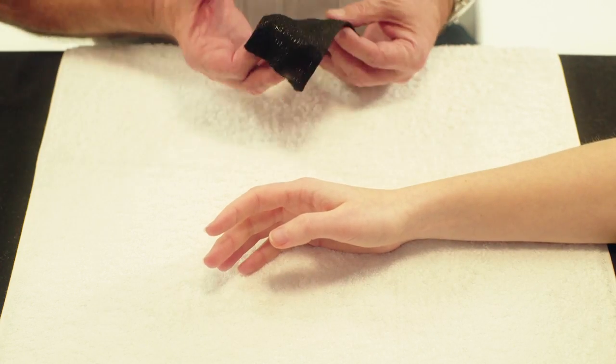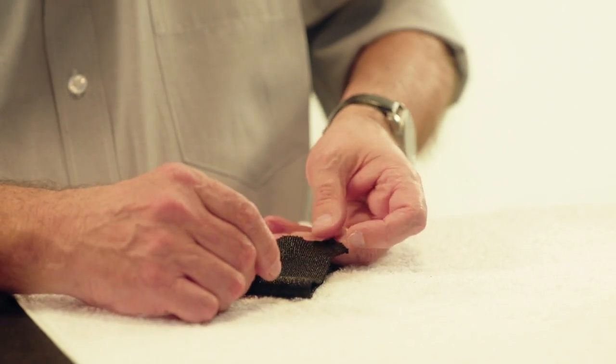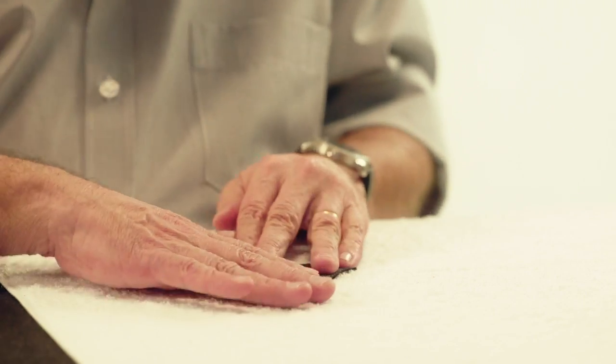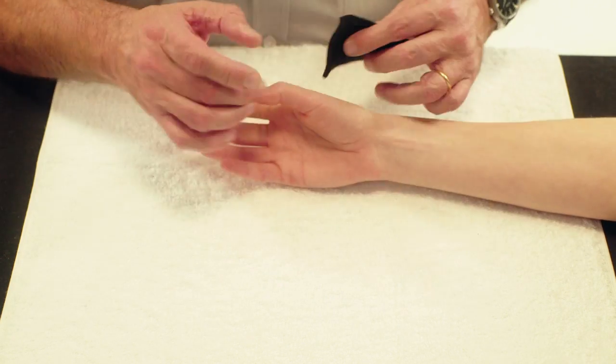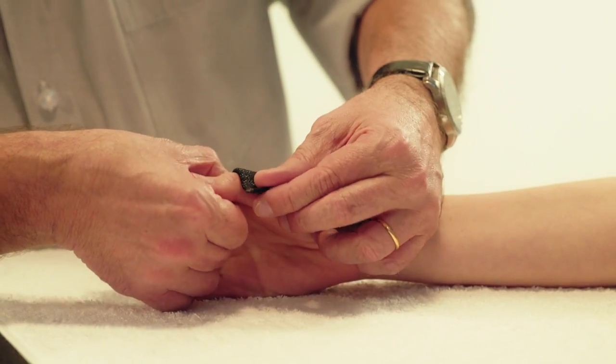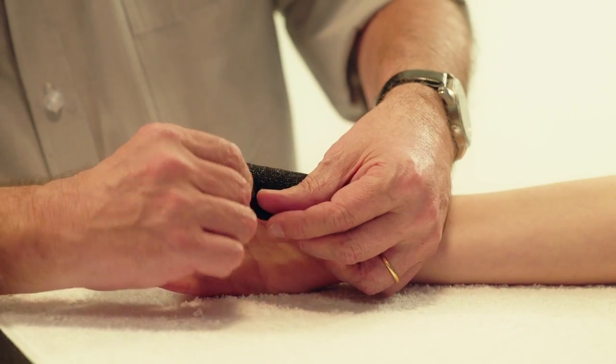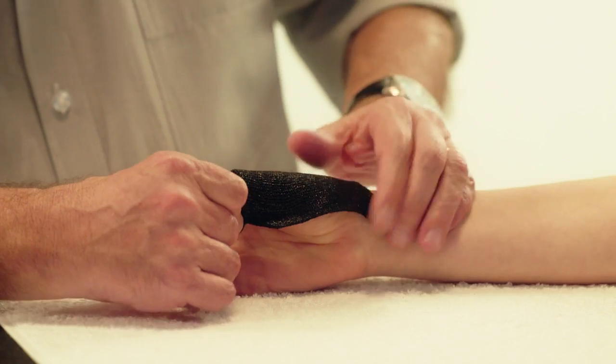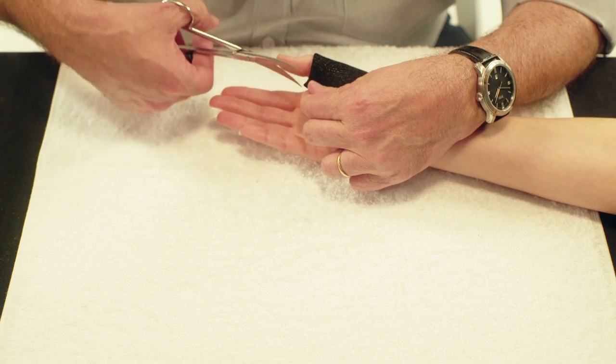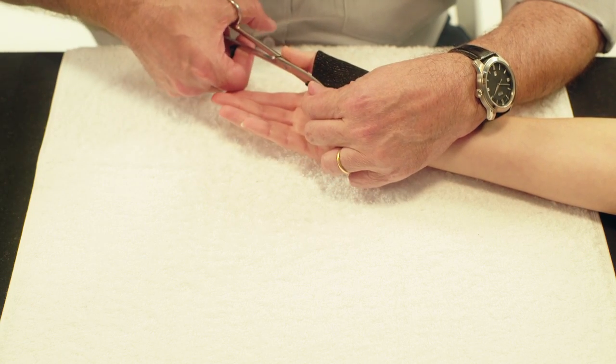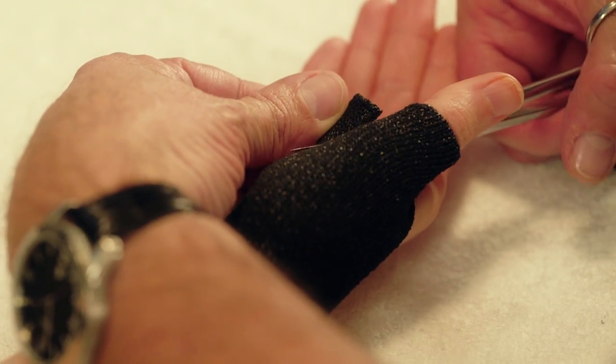Heat the material and fold it in half. Begin by anchoring the end of the Orphicast on the dorsal part of the thumb, just below the IP joint. Pinch the two corners together on the palmer side of the thumb. Cut away any excess material.